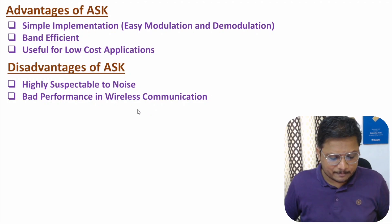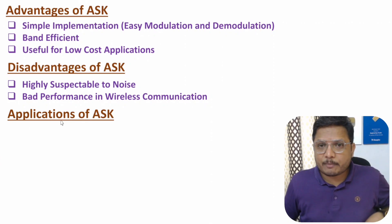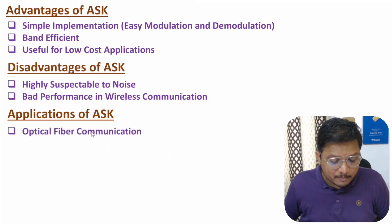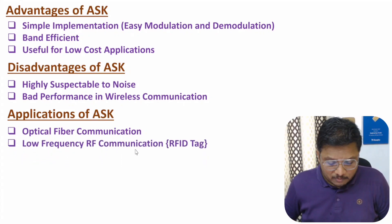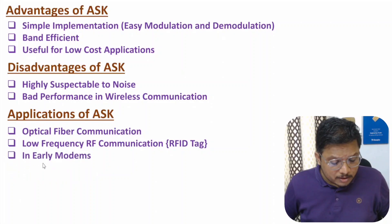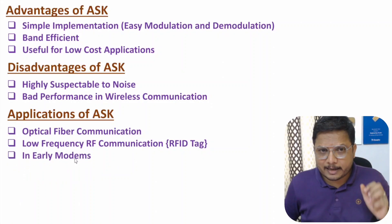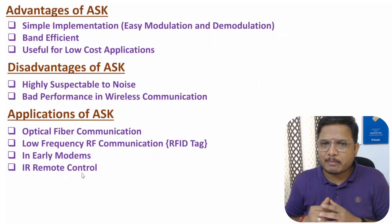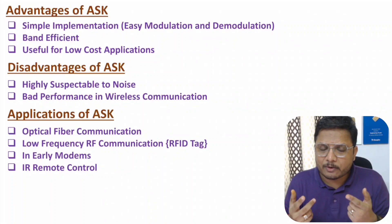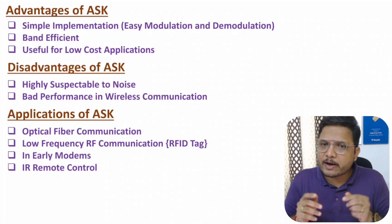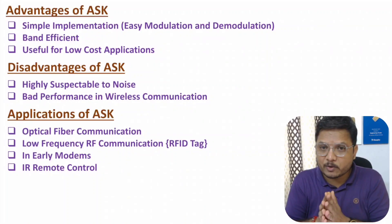Due to its susceptibility to noise, ASK is not preferred for wireless communication where noise is always higher. Applications include optical fiber communication where light signals are sent, low frequency RF communication such as RFID tags which use binary ASK, early modems, and infrared remote controls. In the next video I will explain the mathematical background of ASK and solve interesting examples. Thank you for watching.